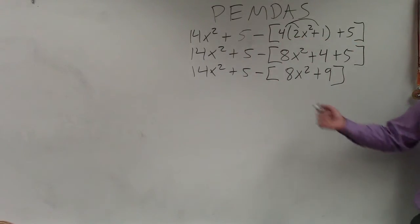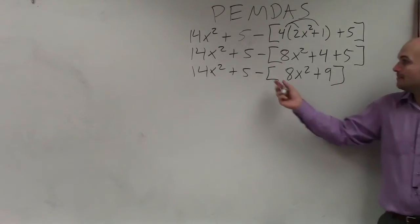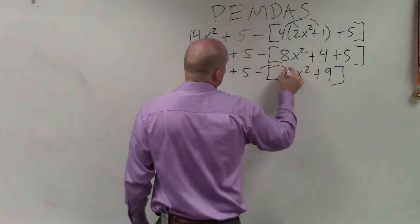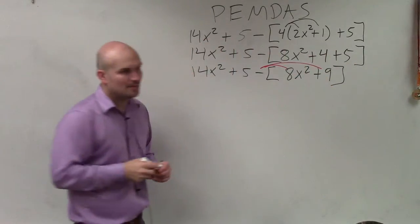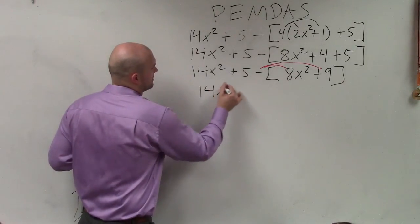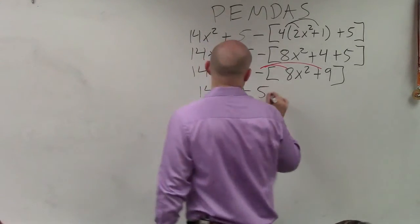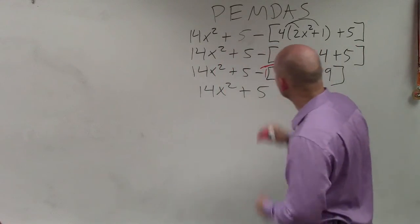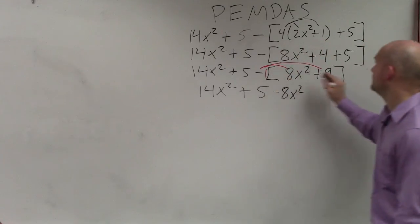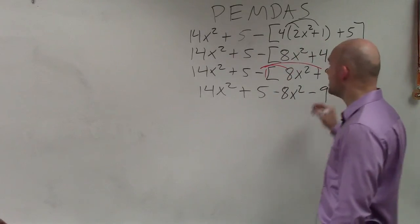Now we see that my grouping symbol, I cannot simplify this any further. These are not like terms. But now my grouping symbol is being multiplied by a negative 1. So I need to apply distributive property again. So I get 14x squared plus 5, negative 1—remember, that's a negative 1—times 8x squared, and then negative 1 times 9 is a negative 9.